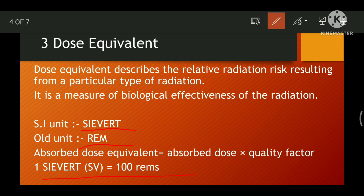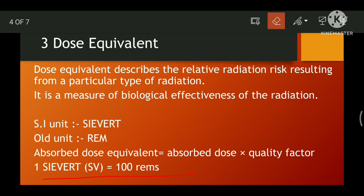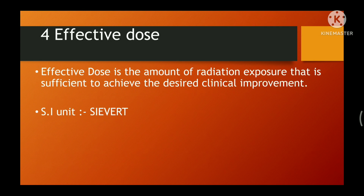Moving towards the fourth unit of radiation — effective dose. Effective dose is the amount of radiation exposure sufficient to achieve the desired clinical improvement. It is used to predict how good the absorbed dose of radiation might be at producing an effect on the human body, accounting for the effectiveness or quantity of radiation.